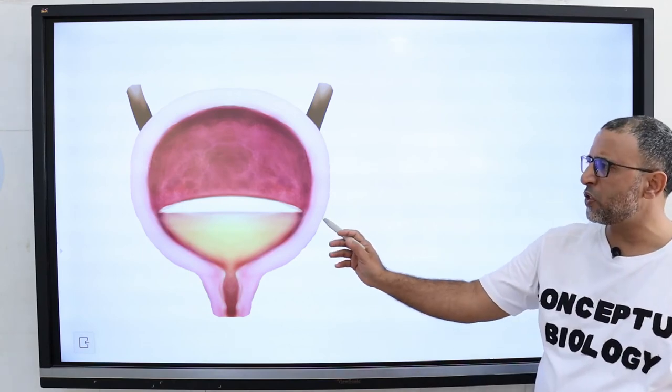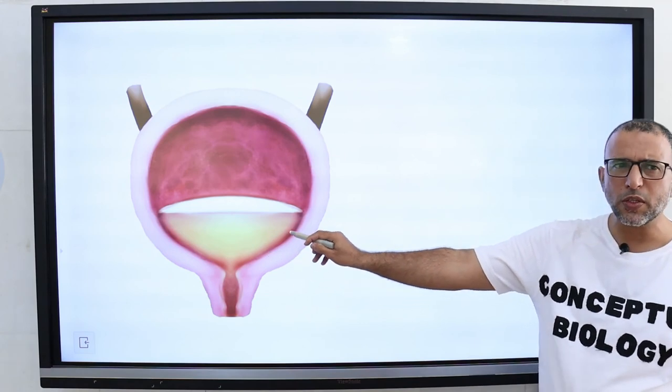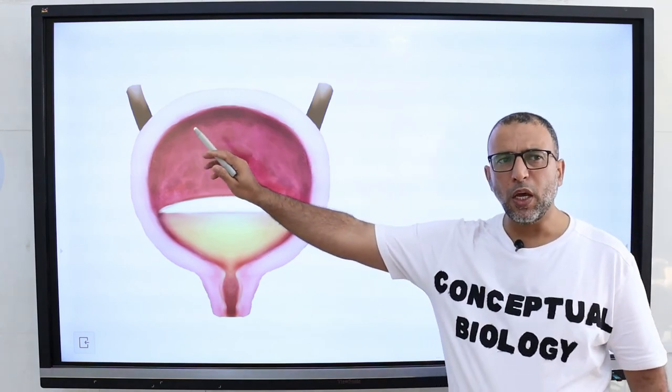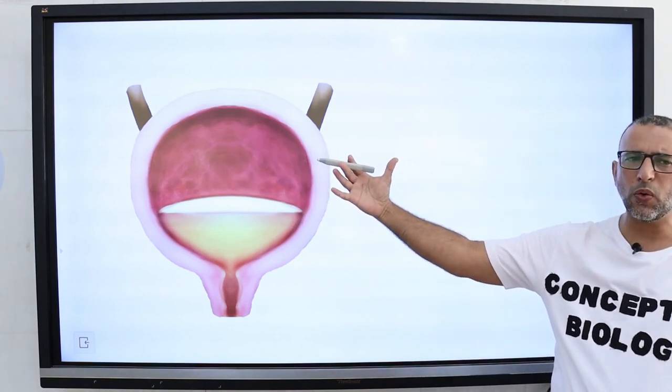For example, tight junctions present between the epithelial cells lining the urinary bladder prevent urine from leaking out into the extracellular space.